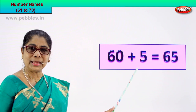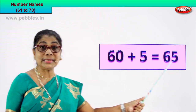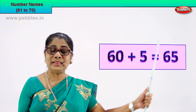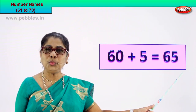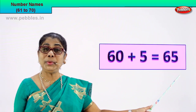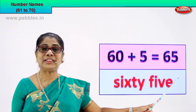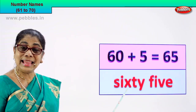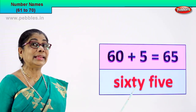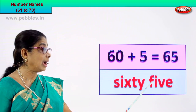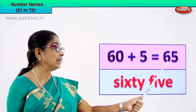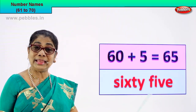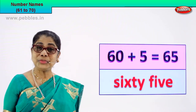60 plus 5 is equal to 65. 6 and 5, 65. That's the numeral. How do we write and spell the name of this number, 65? You know 60, you know the spelling of 5. S-I-X-T-Y, 60. F-I-V-E, 5. Numeral 65 and its name is sixty-five. You learn to write its spelling and name correctly. Good!